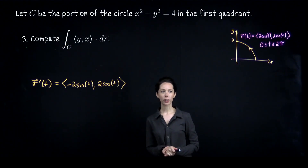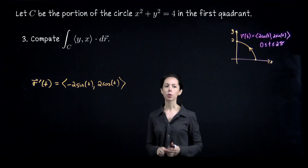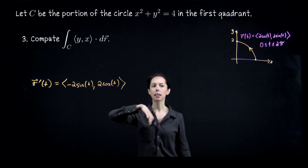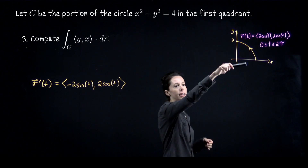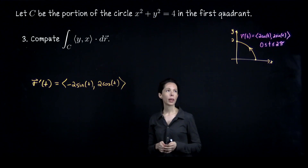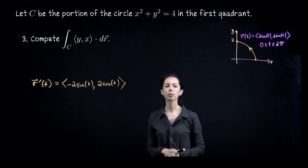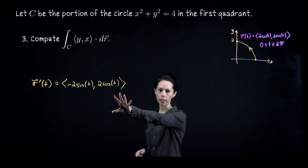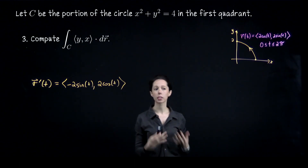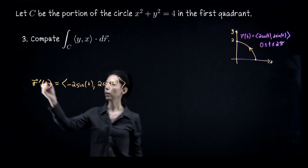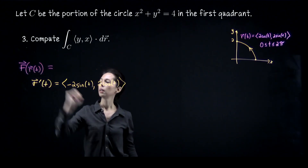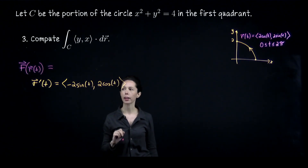Now let's do the vector line integral over this same curve. The vector field is F(x, y) = (y, x). We'll evaluate ∫_C F · dr. We already have our parametrization and I've kept the velocity vector around. For a vector line integral, you want the velocity vector — that's a key difference from the scalar line integral, where we needed the speed.